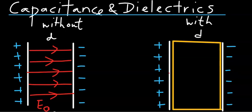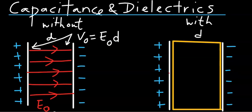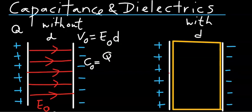The potential difference between these two plates is quite simply V0 equals E0 times the separation. Since the total charge on the plates is Q, its capacitance C0 is quite simply Q divided by V0.